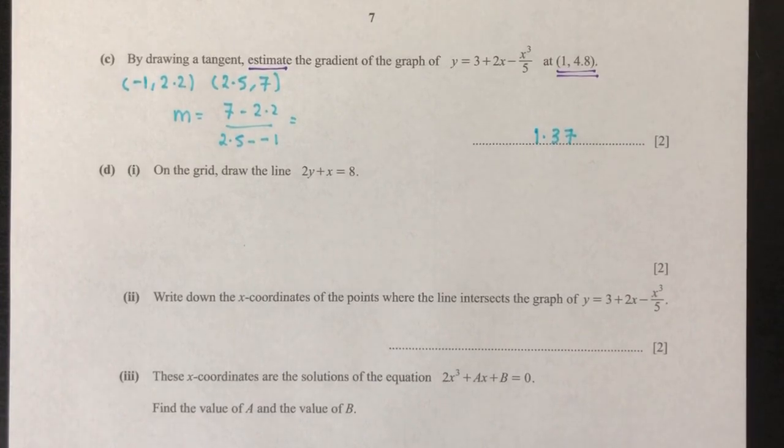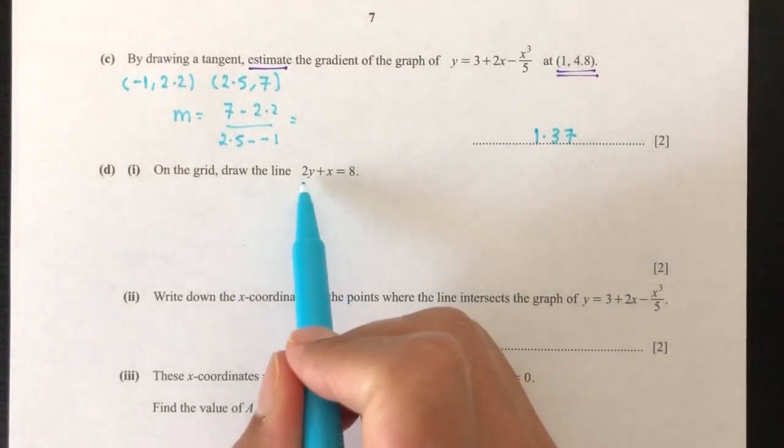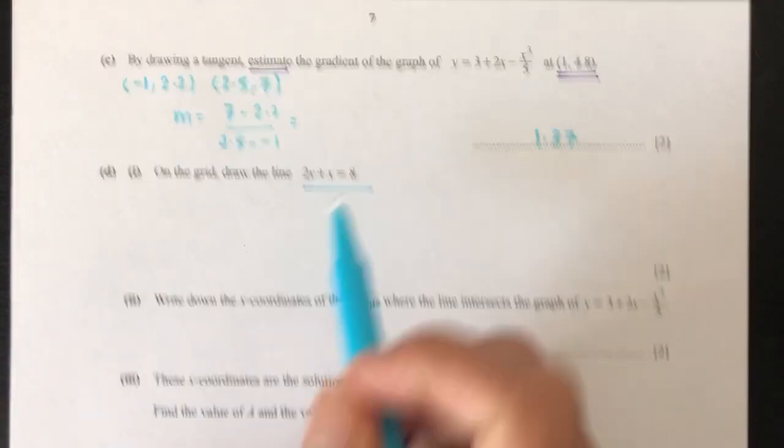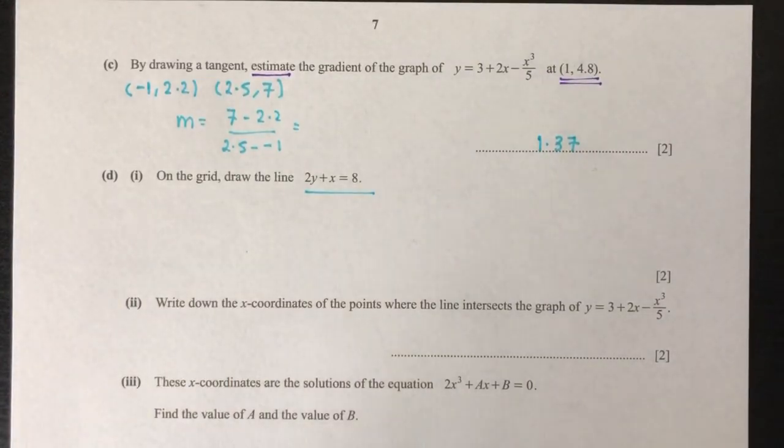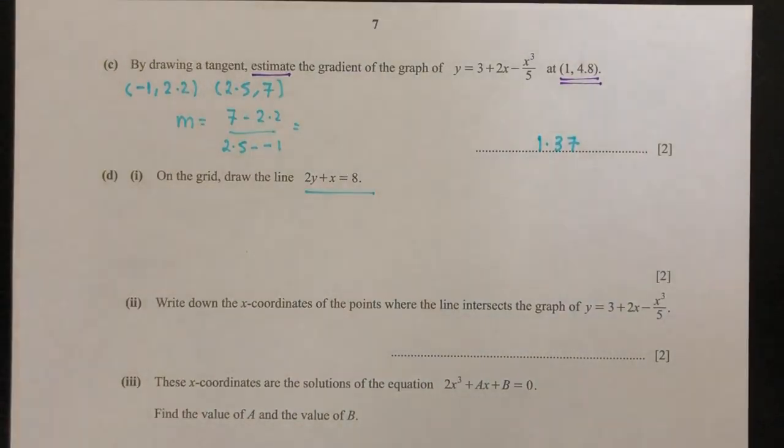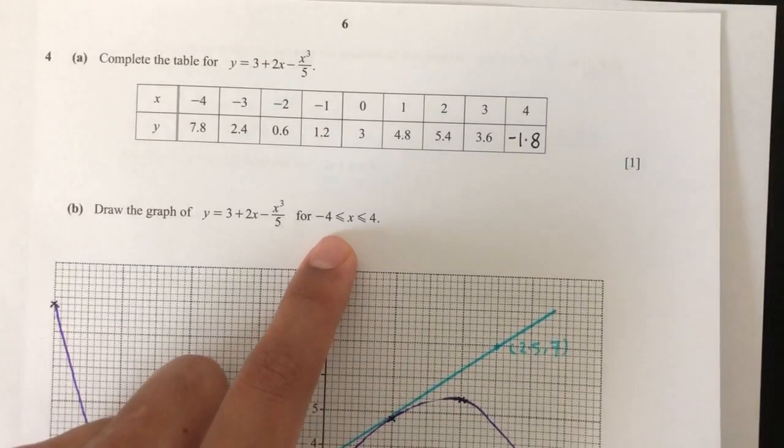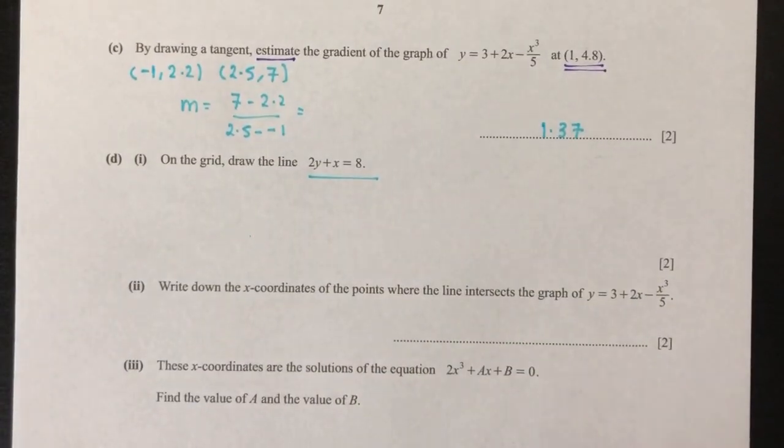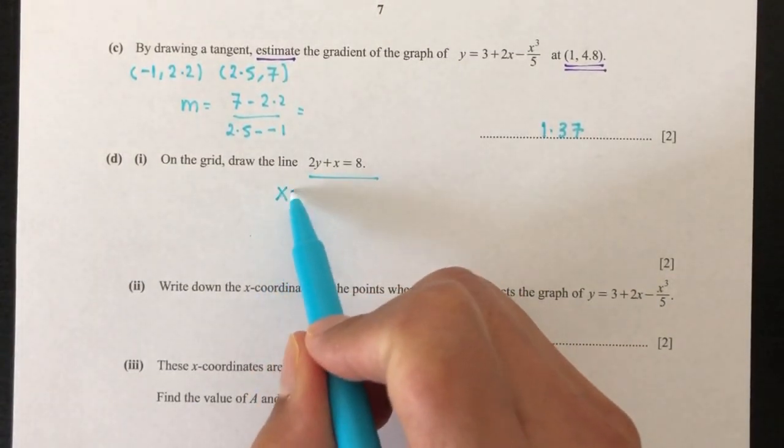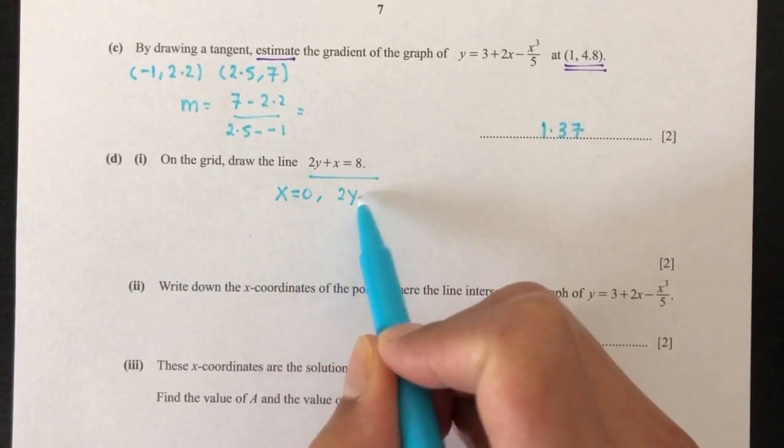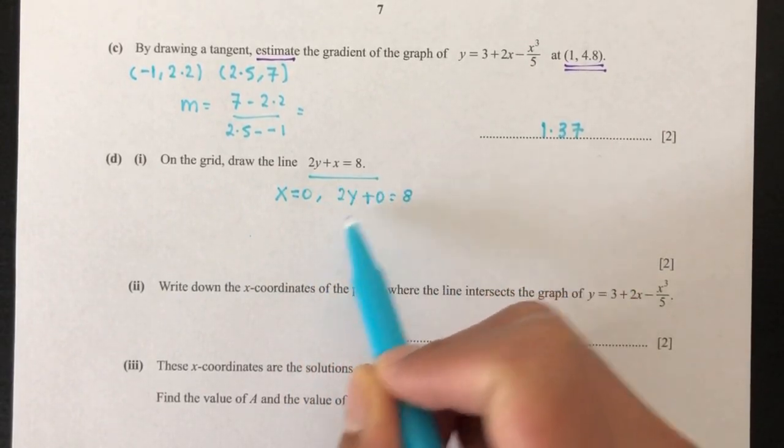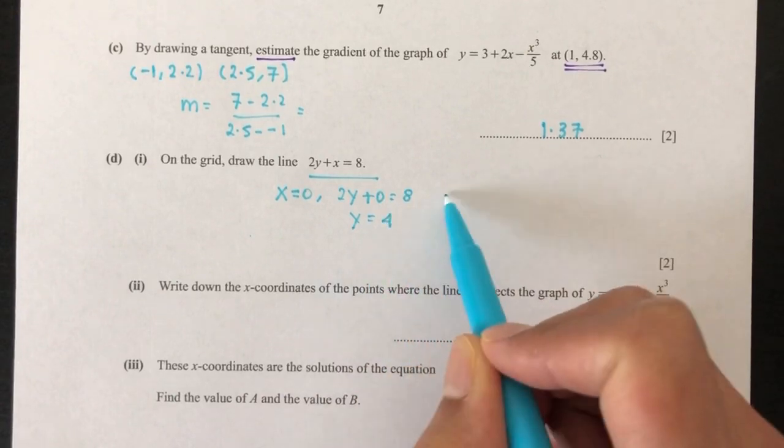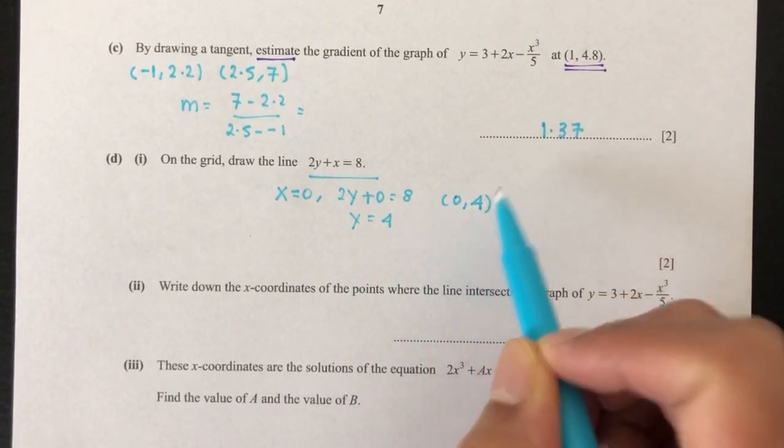Now part D, on the grid below, draw the line 2y plus x equal to 8. So how do you draw a line? You just have to find two points on the line, and then we can join the two points to form the line. Now what values of x can you take? As you can see, x can be between minus 4 and 4. So let's say I choose x equal to 0, for example. So 2y plus 0 is equal to 8. So y will be 4. That is my first point, 0, 4.